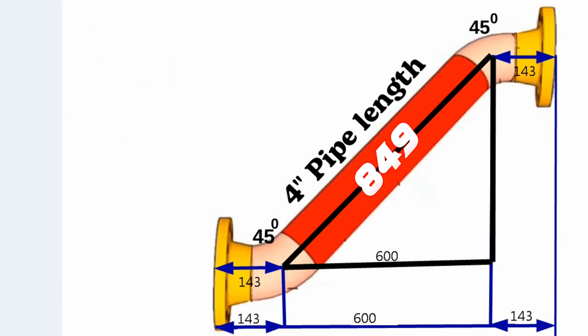If we take off two 45-degree elbows and 3 plus 3 millimeters gaps from this distance of 849 millimeters, then we will find the length of the pipe piece.